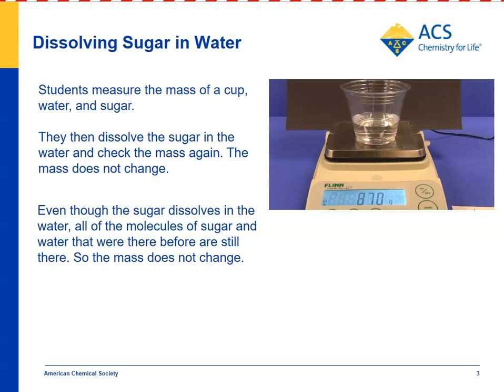Even though the sugar dissolves, the sugar molecules come apart from one another and mix in with the water. No sugar molecules were gained, none were lost — all the ones that were there before are still there. All the water molecules are still there, except for probably a few that evaporated, but our scale isn't sensitive enough to tell. So the mass stays the same.